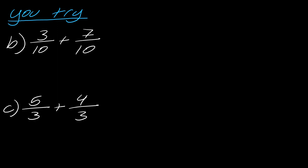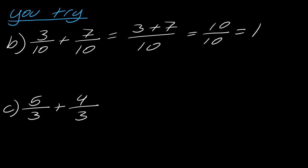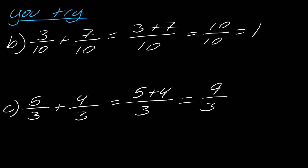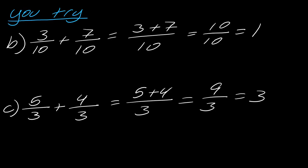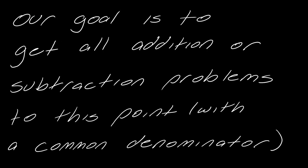I have two more examples — I highly recommend you pause here and hit play when you're ready. For B, I add the tops together to get 10 over 10, which just equals 1. For C, I add the top pieces together and carry the 3 through, so this is 9 over 3, and 9 divided by 3 equals 3. Sometimes when you do this you will be able to simplify — you cannot determine if simplification is possible until the very final step, unlike multiplication and division where you can cancel early.